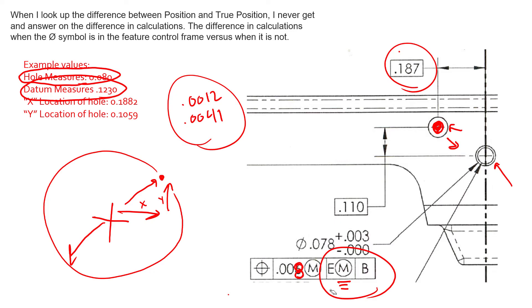And so we need to make sure that if we do shift to bring this feature into tolerance, that that same shift in direction and amount doesn't take some other features that utilize this datum reference frame out of tolerance. We get one datum shift to share across all features that utilize this datum reference frame due to simultaneous requirements.